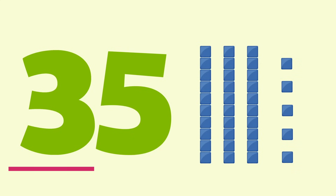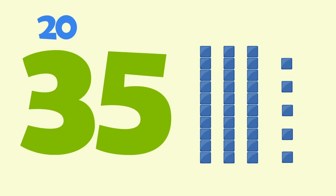The next place over is the tens place. The number in the tens place is always ten times the value of the number shown. It's like counting by tens to the number you see. In our number 35, the three is in the tens place. We can find its value by counting by tens three times: 10, 20, 30. The value of the three is 30.